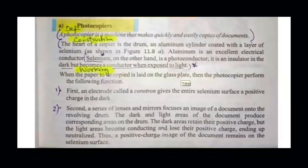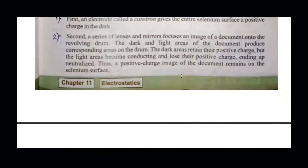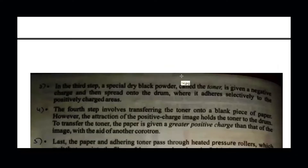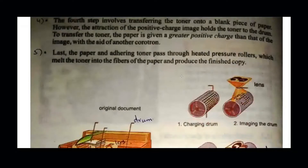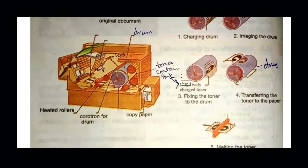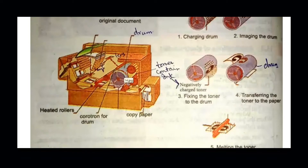We use the photocopier to copy documents. To understand the construction and working, we consider the figures — there are five points on the photocopier. The construction: the central portion is an aluminum cylinder, which is the heart of the photocopier machine. This aluminum cylinder is coated with a material known as selenium, which is a photoconductive material, meaning it conducts whenever it is exposed to light.